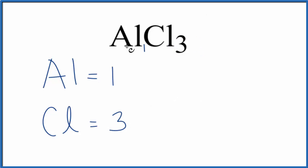The total number of atoms in AlCl3, three plus one, is four total atoms in this aluminum chloride.